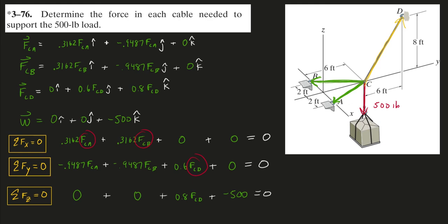To solve these, I'll just throw them in a matrix. But of course, you can solve them by hand if you want to. You'll get 197.6 pounds for FCA, 197.6 pounds for FCB, and 625 pounds for FCD. So really, it's just one concept repeated three times for this problem. Hope it made sense. Feel free to ask any questions you may have in the comments.